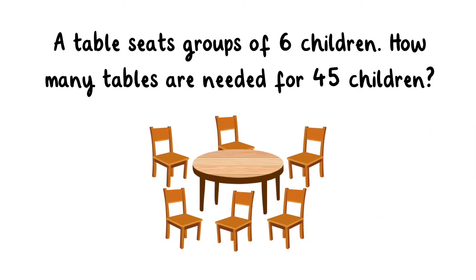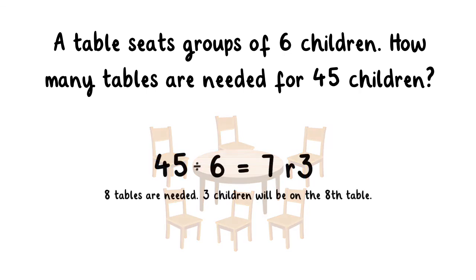A table seats groups of six children. How many tables are needed for 45 children? 45 divided by 6 equals 7 with a remainder of 3. Eight tables are needed and three children will be on the eighth table.